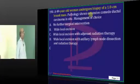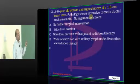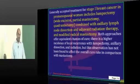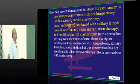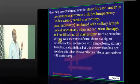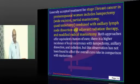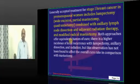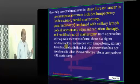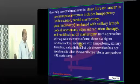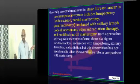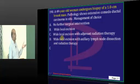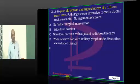A 49-year-old, after biopsy, found to have a 1 cm breast mass — comedo ductal carcinoma in situ. For stage 1 breast cancer in a premenopausal woman, options are: lumpectomy combined with axillary lymph node dissection and adjuvant radiotherapy, or modified radical mastectomy. Both are roughly equivalent in cure, but local recurrence is slightly higher with lumpectomy plus radiation. Local excision with adjuvant radiation is still advocated since it is stage 1.